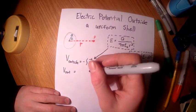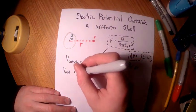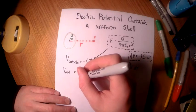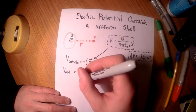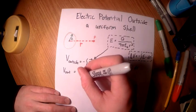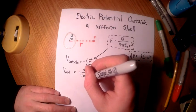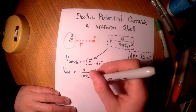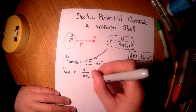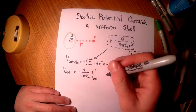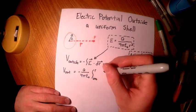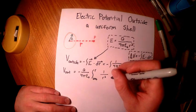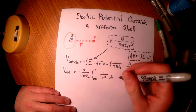The next step is to pull out our constants, which gives us negative Q over 4 pi epsilon naught. The integral is going to be evaluated from infinity to r, because we're coming from a very far distance and evaluating it from there. That leaves us with the integral of 1 over r squared dr.